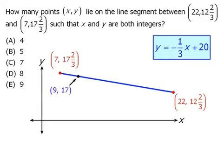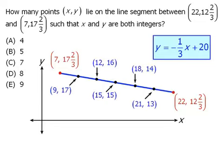So for example, x could equal 9, in which case y equals the integer 17. x could also equal 12, 15, 18, and 21.